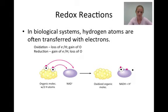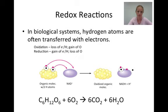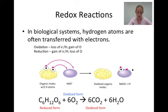Let's look at an example of oxidation and reduction in a chemical reaction. This reaction shows the breakdown of glucose into carbon dioxide and water during cellular respiration. Glucose, the carbon-containing compound on the left, loses hydrogens to become carbon dioxide on the right. Therefore, glucose is in the reduced form of the carbon-containing compound and carbon dioxide is the oxidized form. The hydrogens lost by glucose were picked up by oxygen on the left, forming water. Therefore, the oxygen on the left is in the oxidized form, while water on the right is in the reduced form.